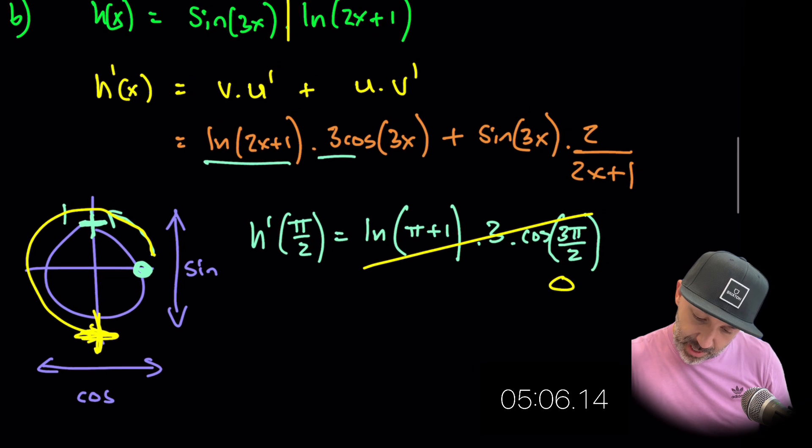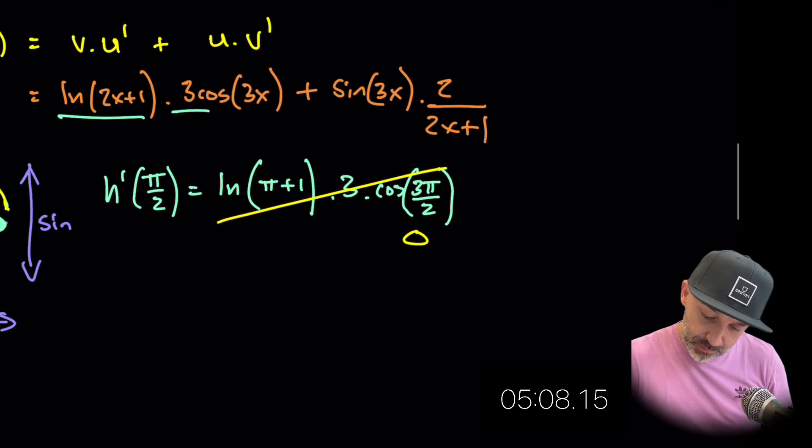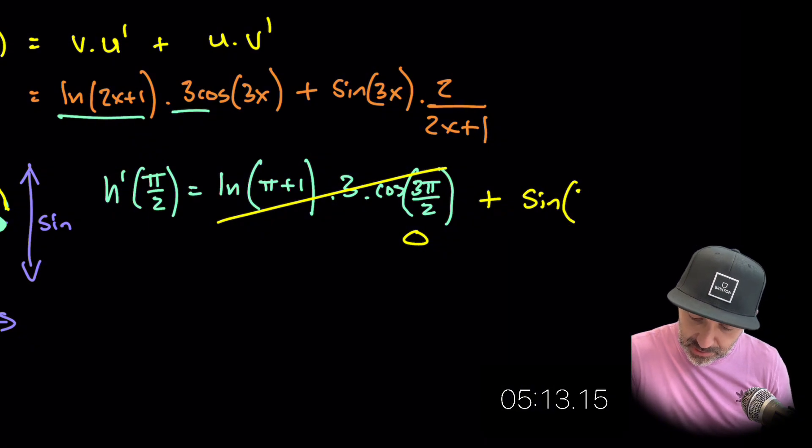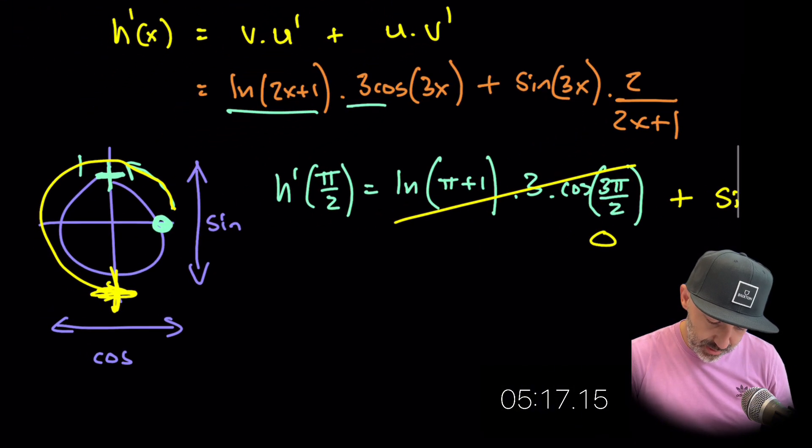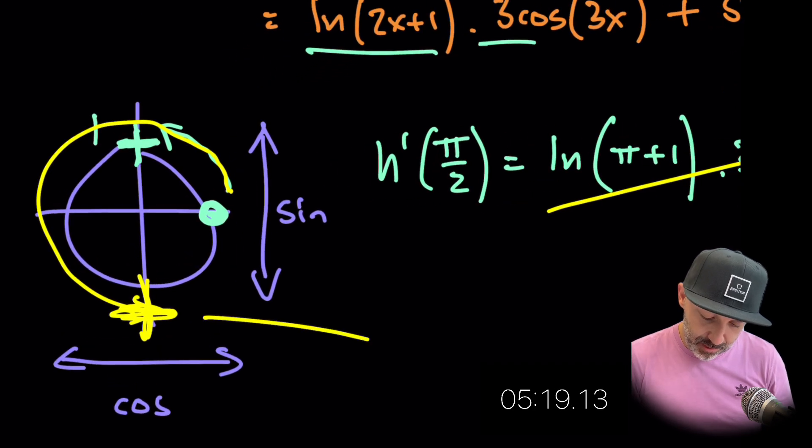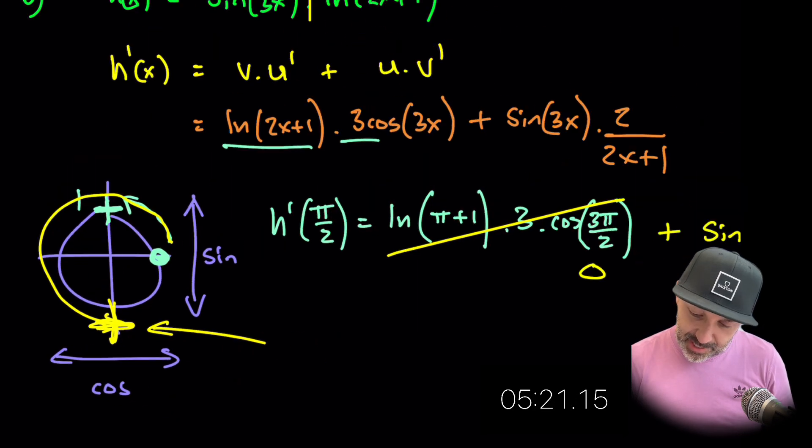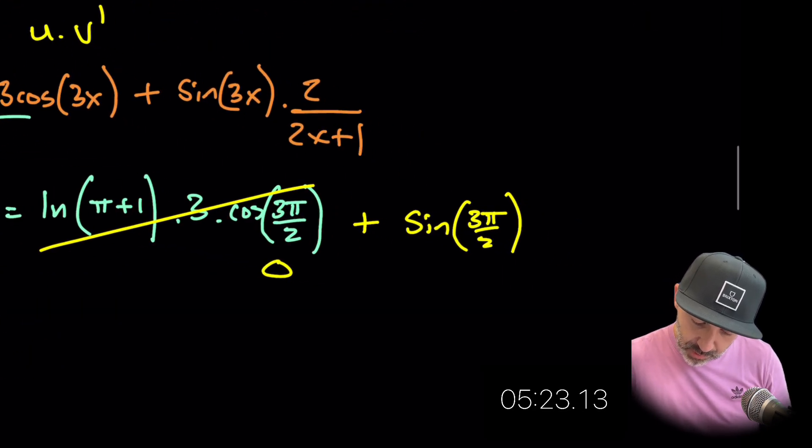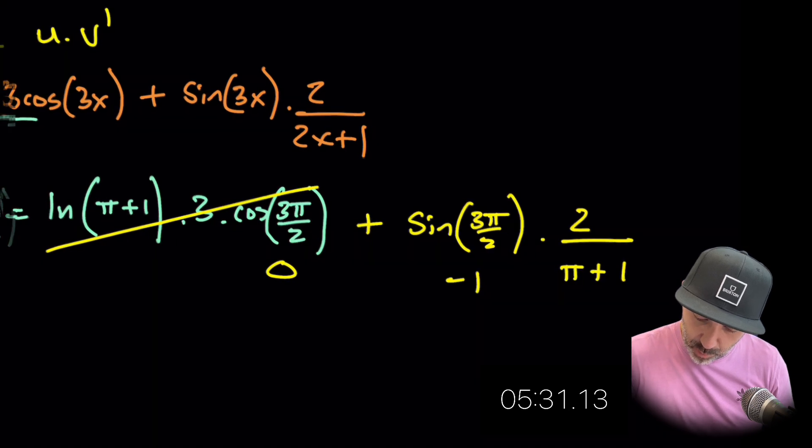So now we have this last little bit to work on over to the right here plus sine of 270. Okay well sine of 270, if we look over here again we're back around here at 270. So sine is negative 1. So this whole expression is going to be negative 1. And then we have times 2 over 2 times, so that will be pi plus 1.